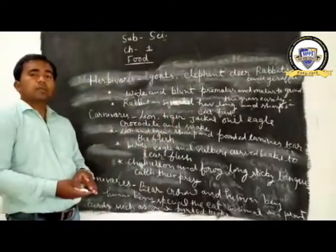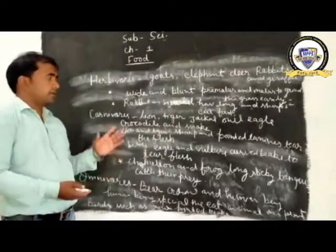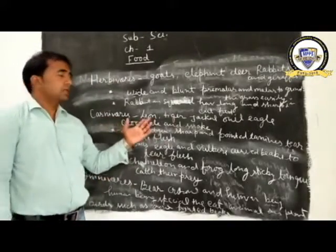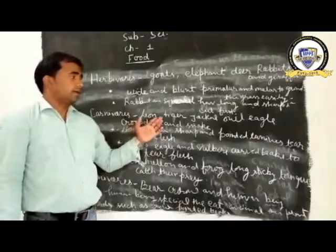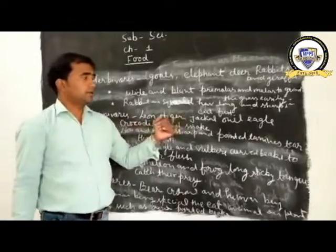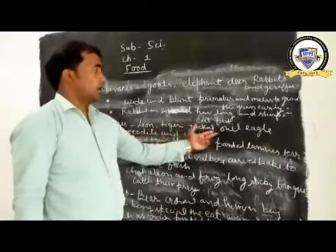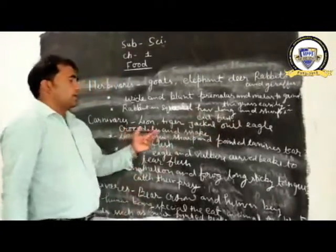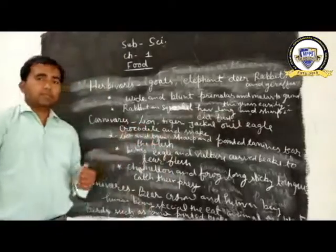Then carnivorous — different types of animals are also carnivorous, like lion, tiger, jaguar, owls, eagles, raptors, and snakes.